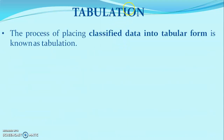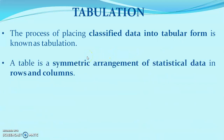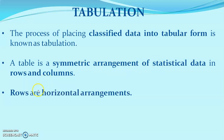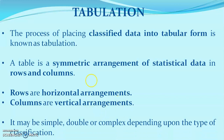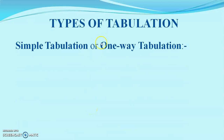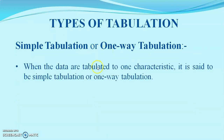Tabulation is the arrangement of data — specifically, the process of placing classified data into tabular form. It is a systematic arrangement of statistical data in rows and columns, where horizontal arrangement is called rows and vertical arrangement is called columns. Tabulation may be simple, double, or complex. In simple tabulation, or one-way tabulation, only one characteristic of a population is considered at a time.